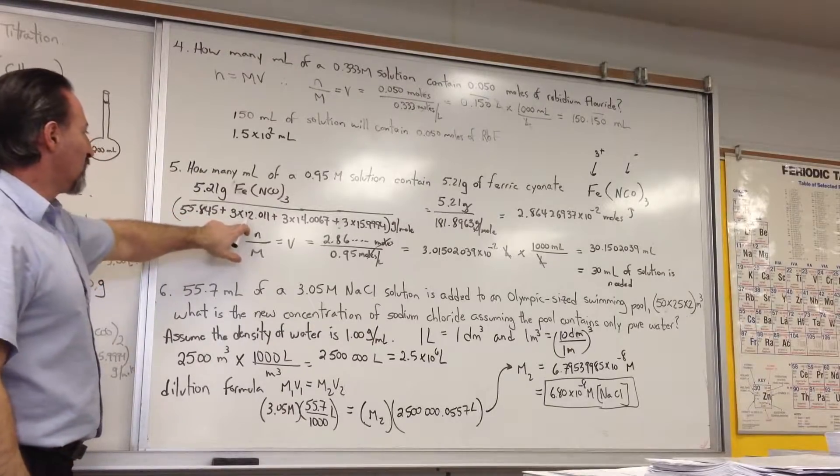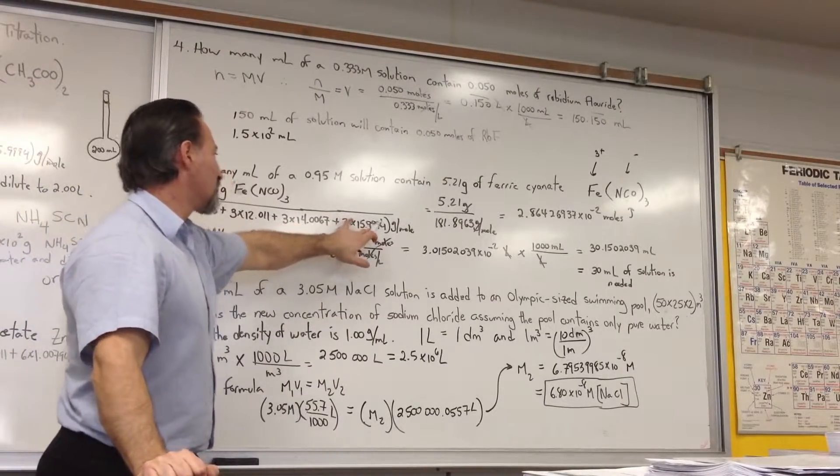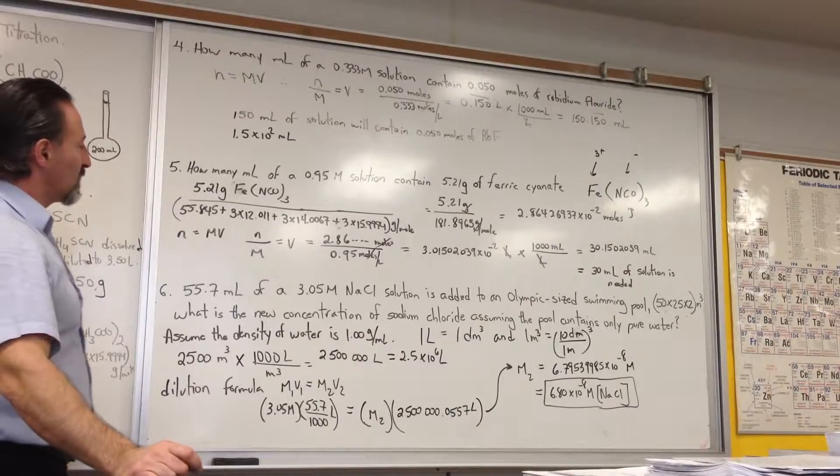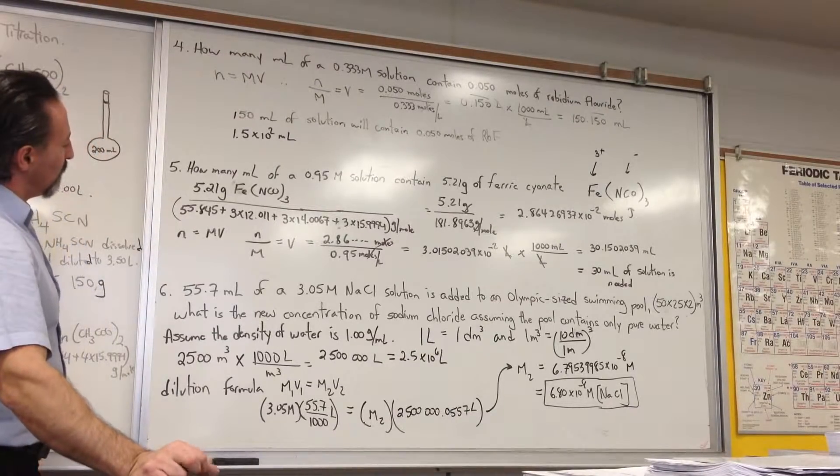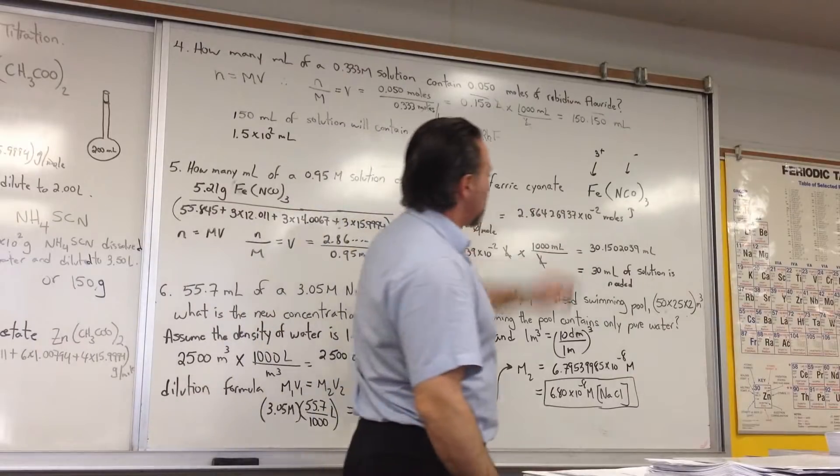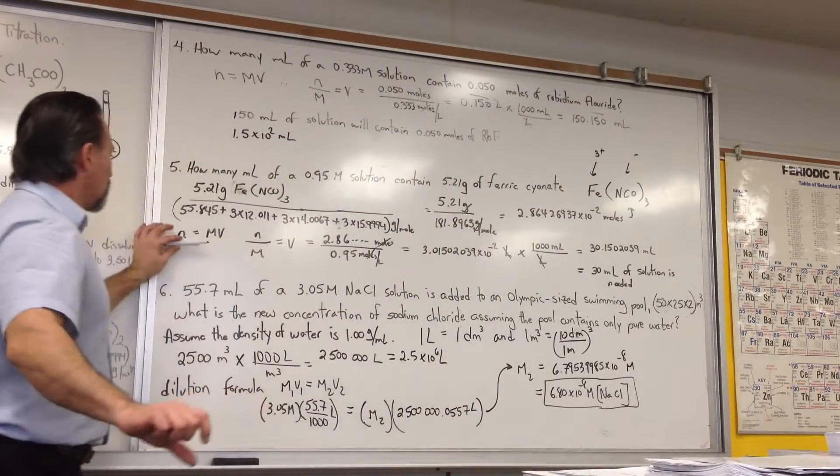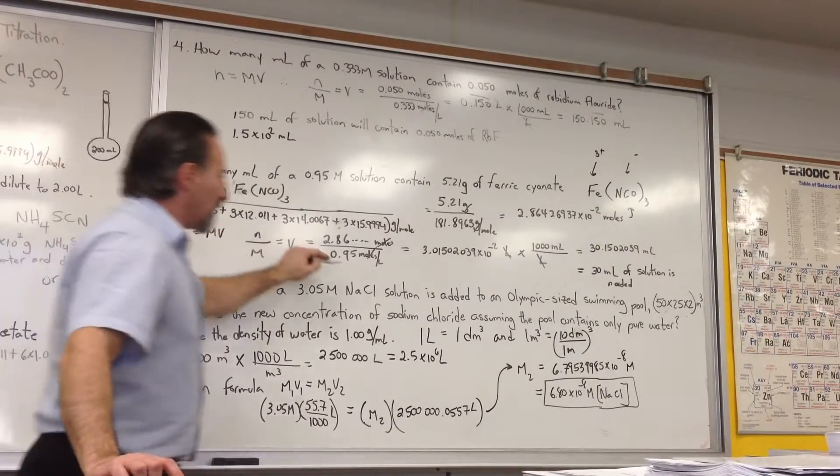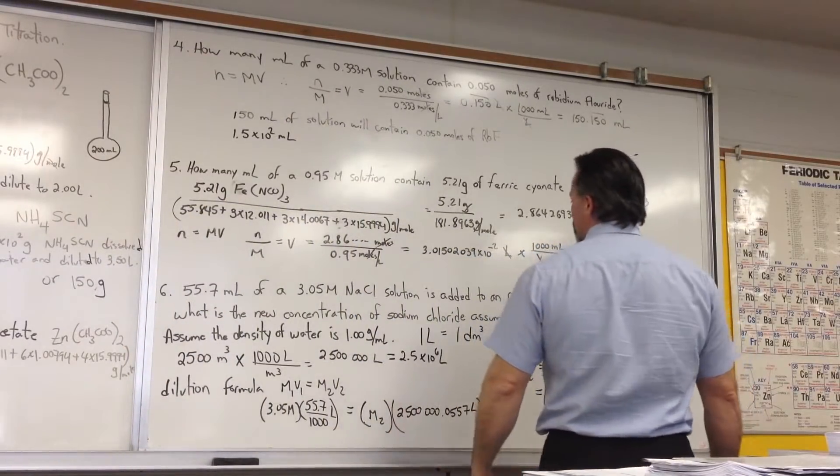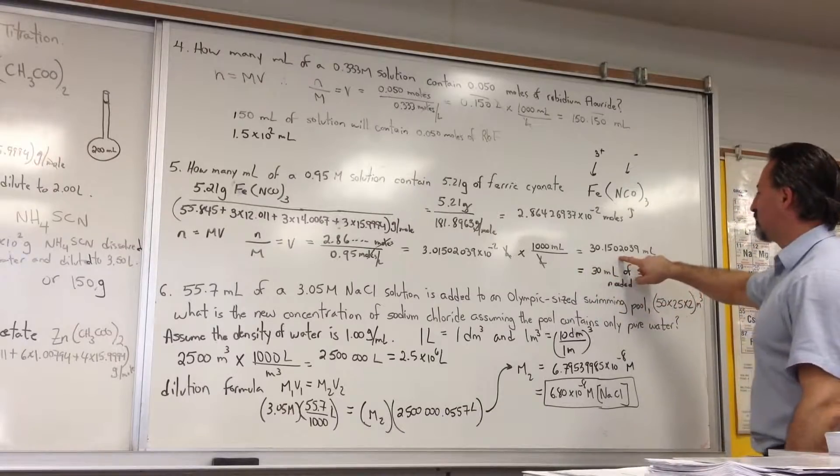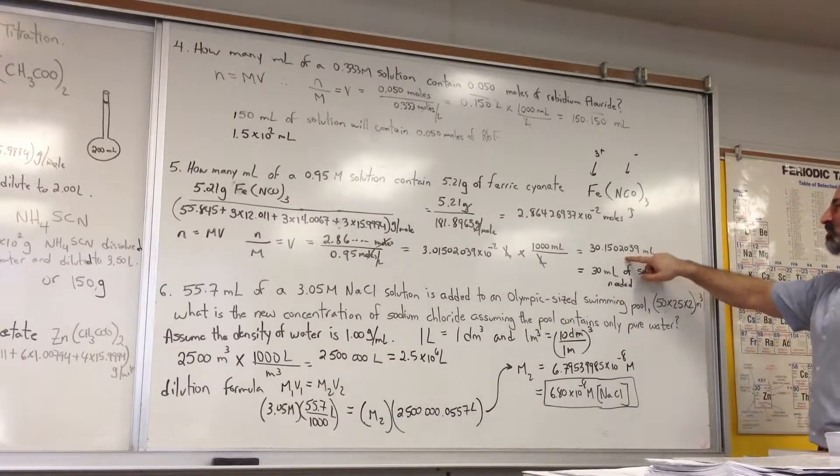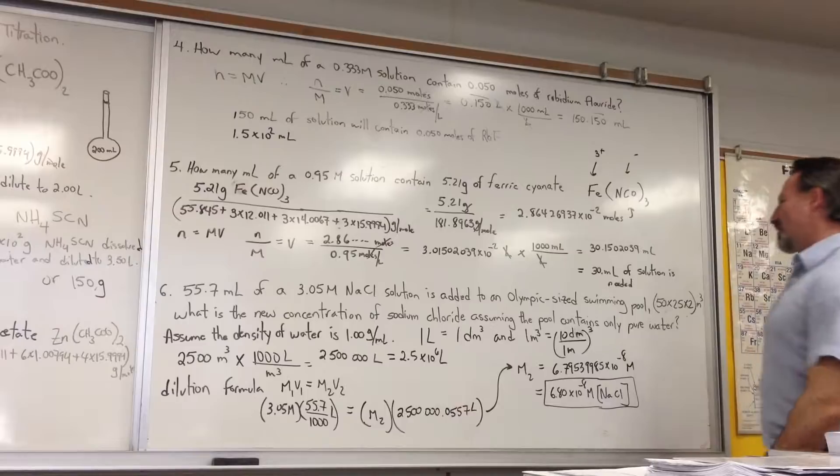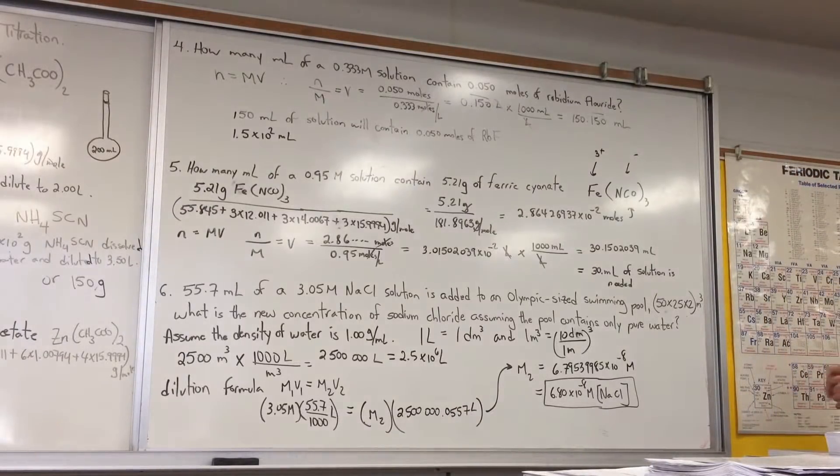We're going to divide by the molar mass of cyanate. This is iron. This is the three carbons, three nitrogens, and the three oxygens. Times 3, because there's a three outside the bracket, and NCO, the cyanate, has one of each. Gives you 2.86 times 10 to the minus 2 moles of ferric cyanate. We then use our formula, rearrange for the volume that we need. Here's the number of moles. Here's the molarity. Plug in the two numbers, and we get that you need 3.01 times 10 to the minus 2 liters. We multiply by 1,000 to convert to milliliters, 30.1 milliliters. We're only allowed two significant figures. So 30 ml of solution is needed.